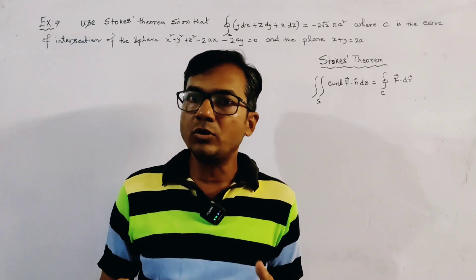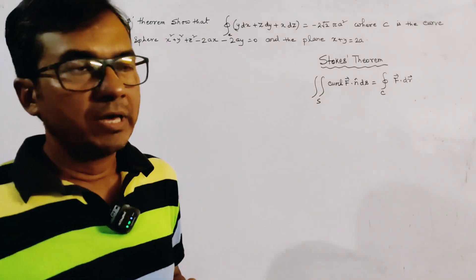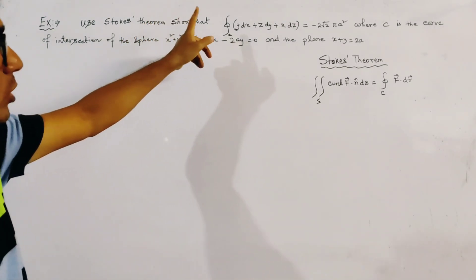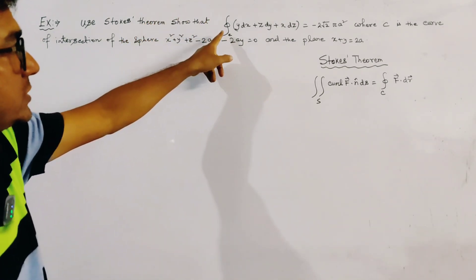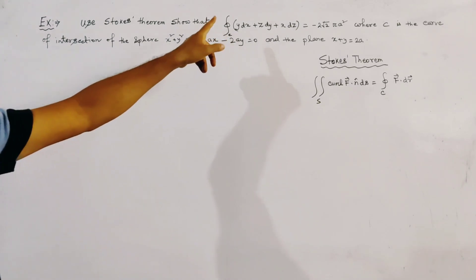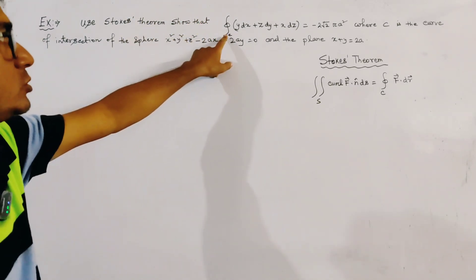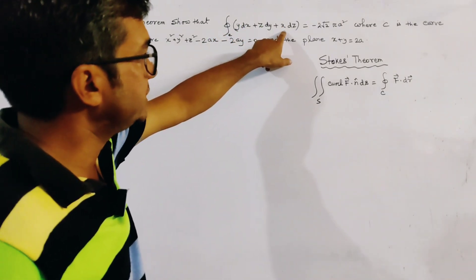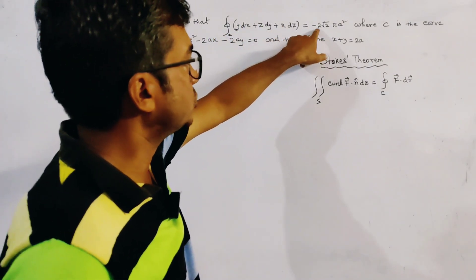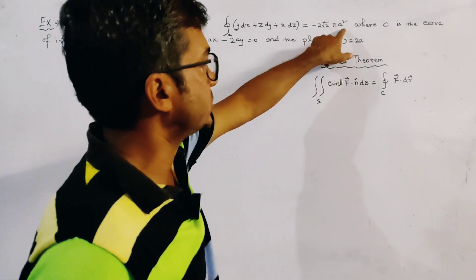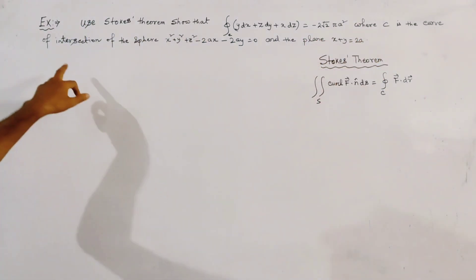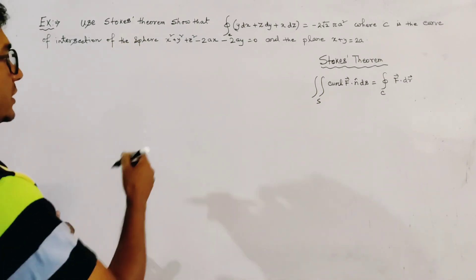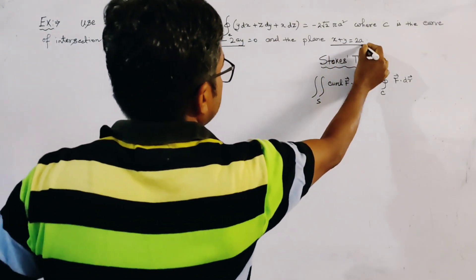This is an application of Stokes theorem. Applying Stokes theorem, we have to find the value of the integration — this is the line integration, also called circulation over the closed curve C. And this is y dx plus z dy plus x dz, which is equal to minus 2 root 2 pi squared, where C is the curve of intersection of the sphere and the plane x plus y equals 2a.